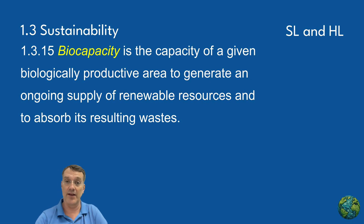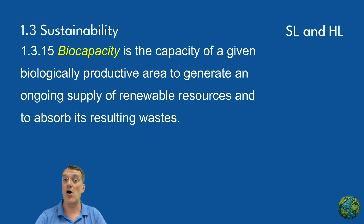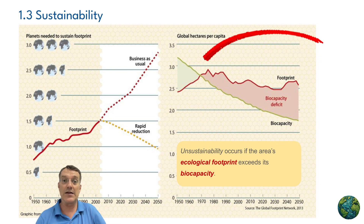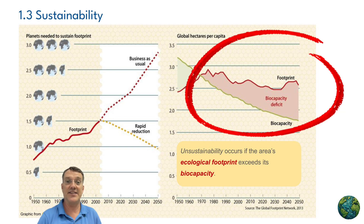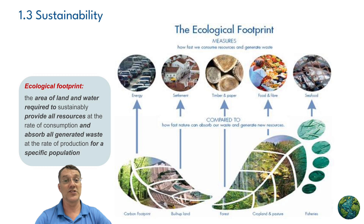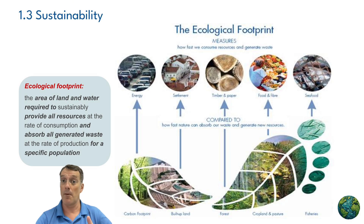Biocapacity, on the other hand, is the capacity of a given area to generate an ongoing supply of renewable resources and absorb its resulting waste — essentially how much the Earth can provide and absorb. If an area's ecological footprint exceeds its biocapacity, that indicates unsustainability. It means we're using resources faster than they can be replenished, or we're producing waste faster than it can be absorbed, or both.